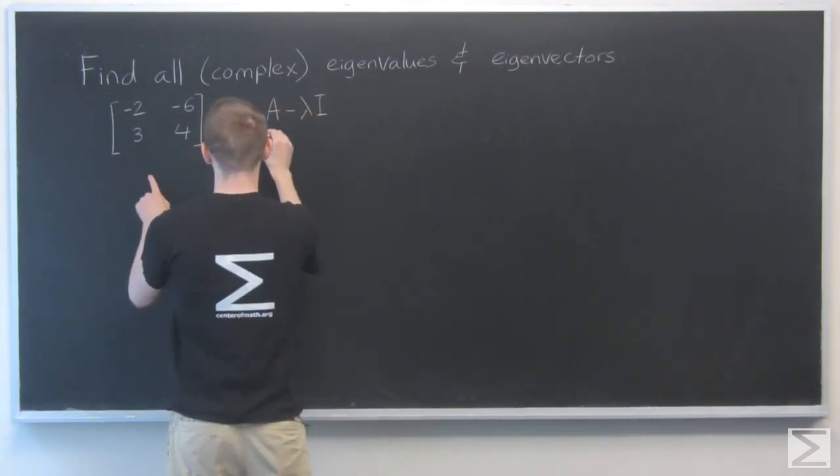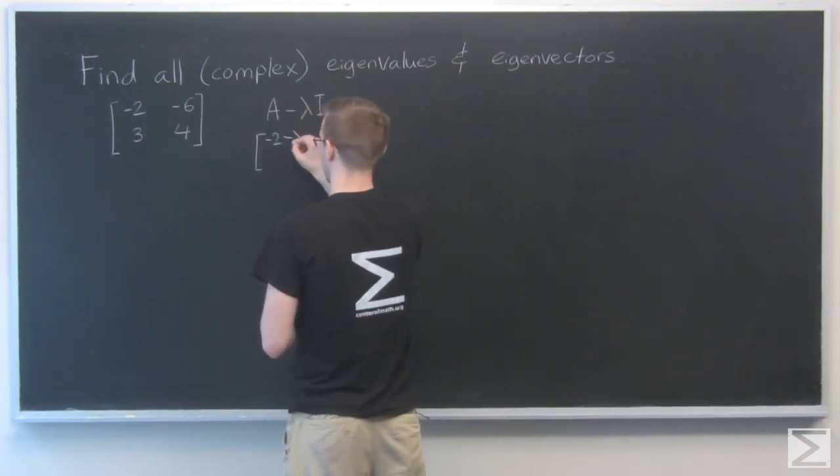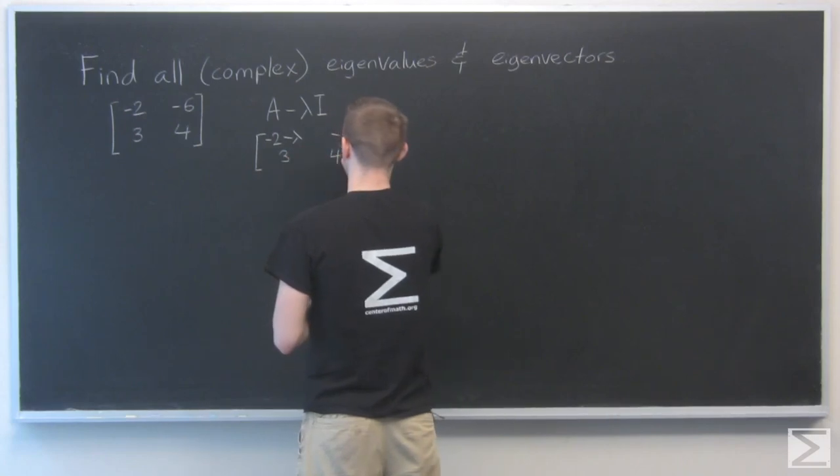So that matrix, in this case, is going to be negative 2 minus lambda, minus 6, 3, and 4 minus lambda.